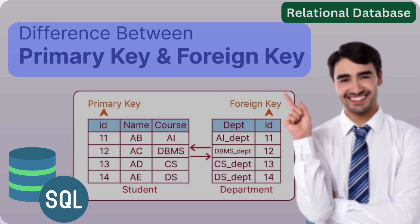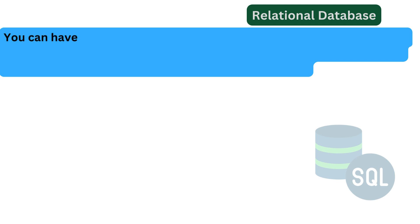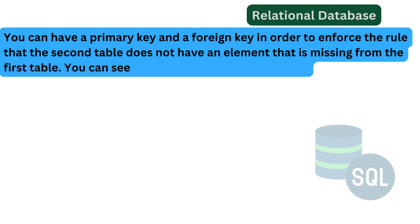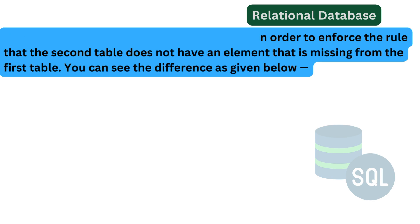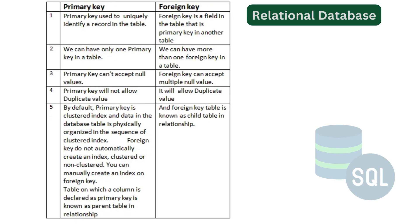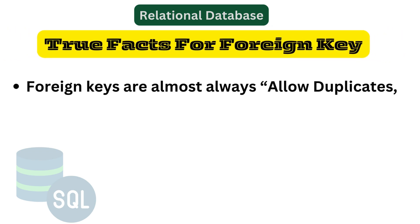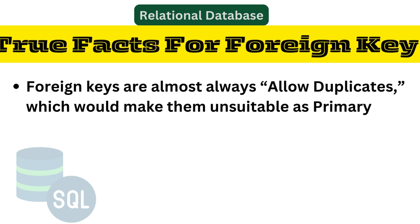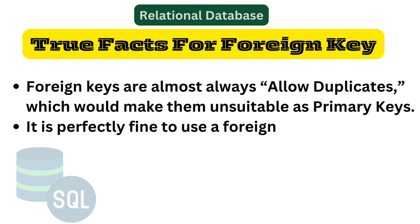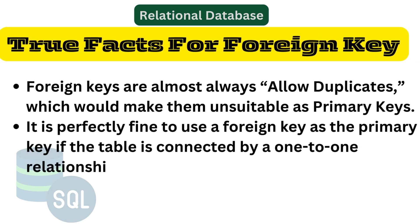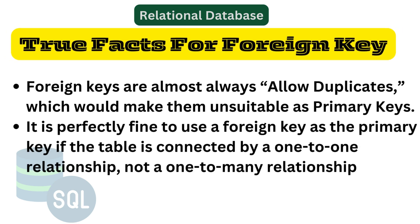Regarding the distinctions between primary and foreign keys: you can have a primary key and a foreign key in order to enforce the rule that the second table does not have an element that is missing from the first table. Foreign keys almost always allow duplicates, which would make them unsuitable as primary keys. It is perfectly fine to use a foreign key as the primary key if the table is connected by a one-to-one relationship, not a one-to-many relationship.